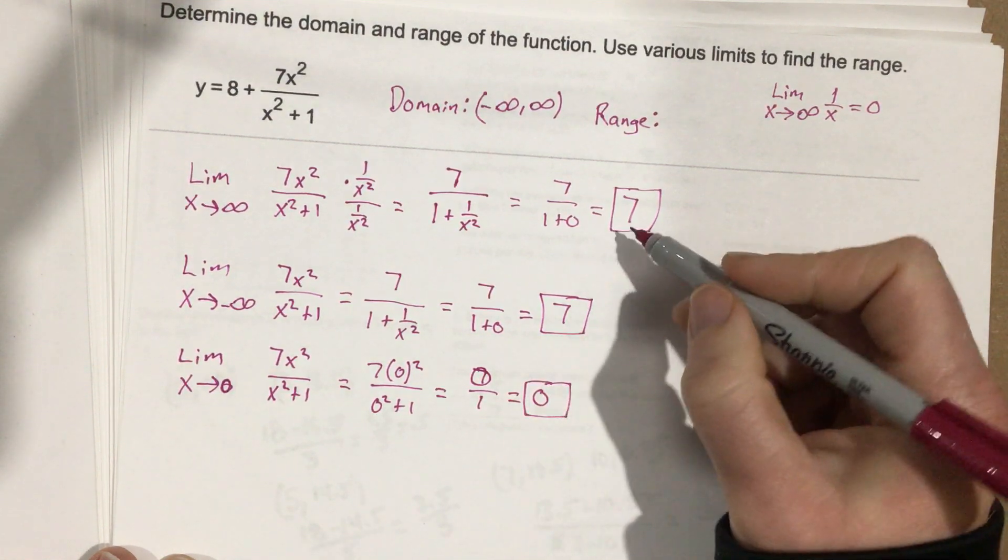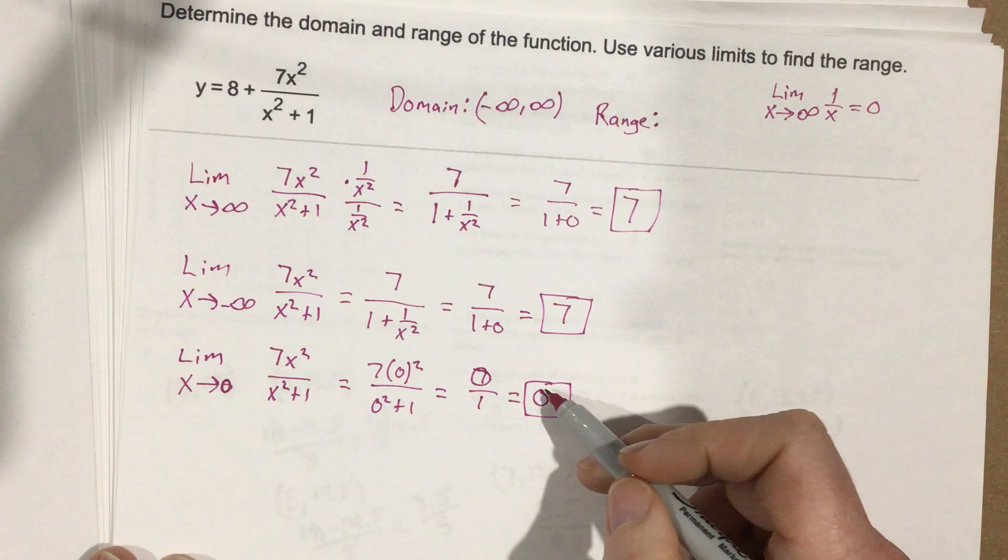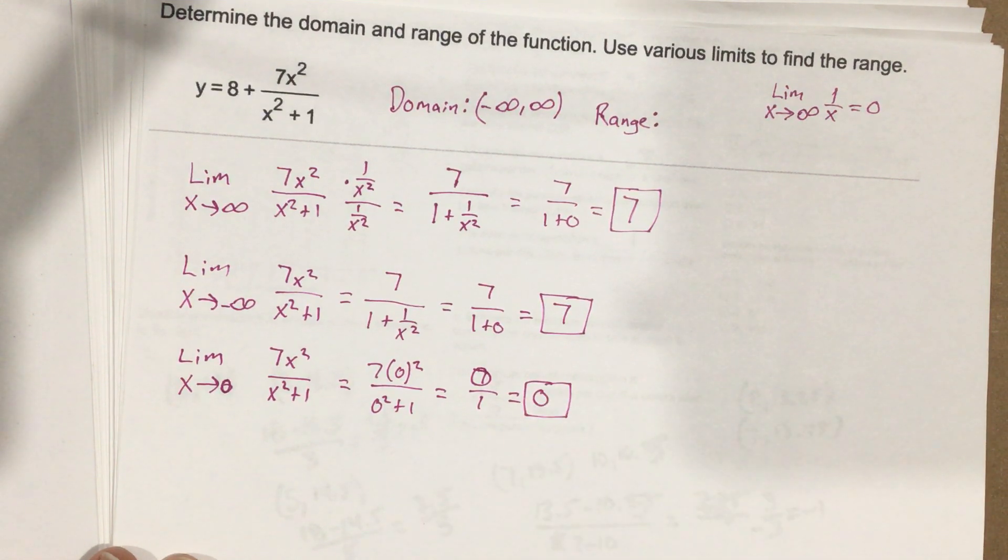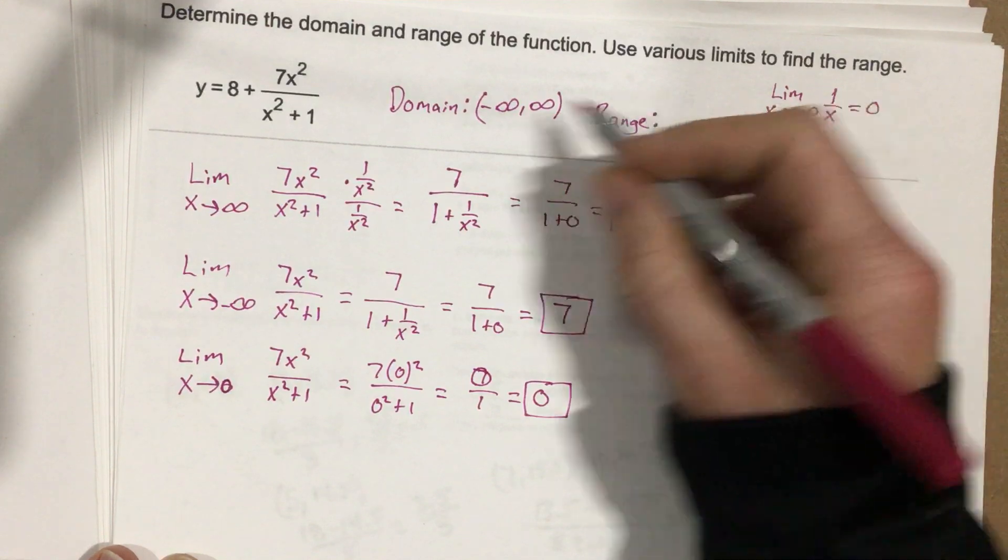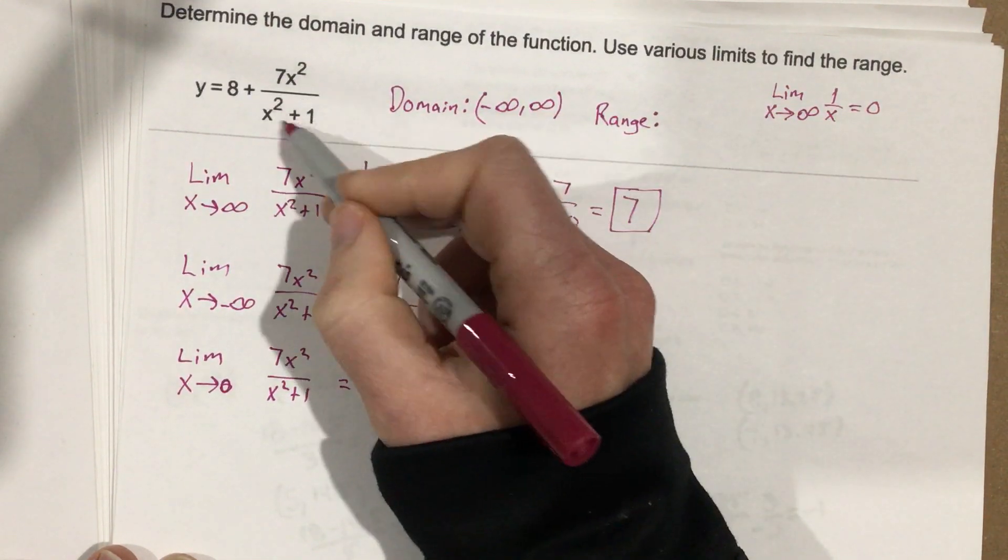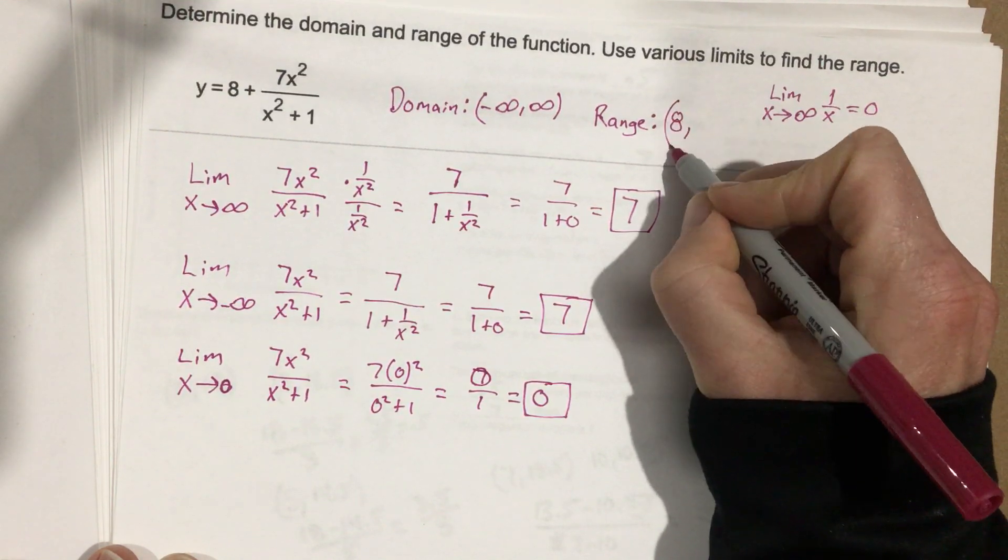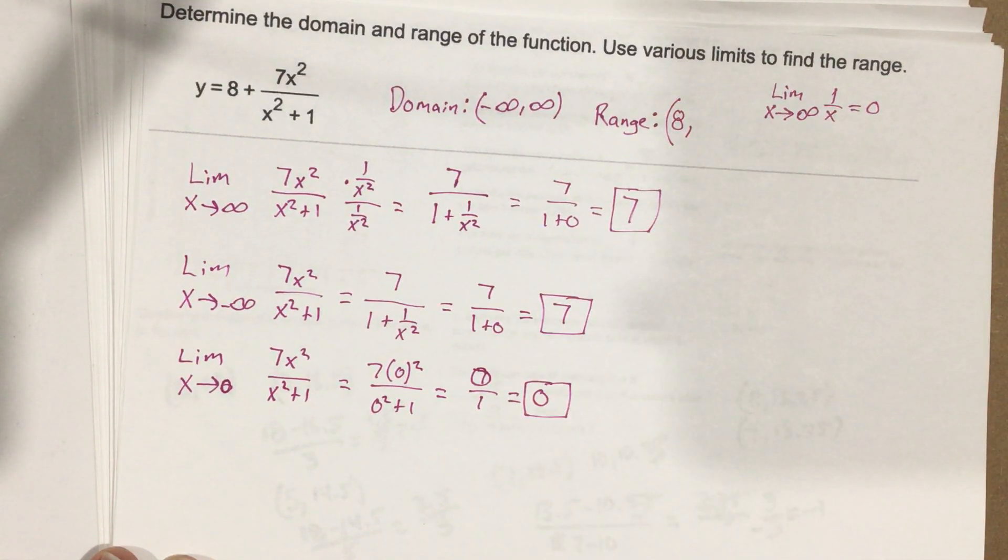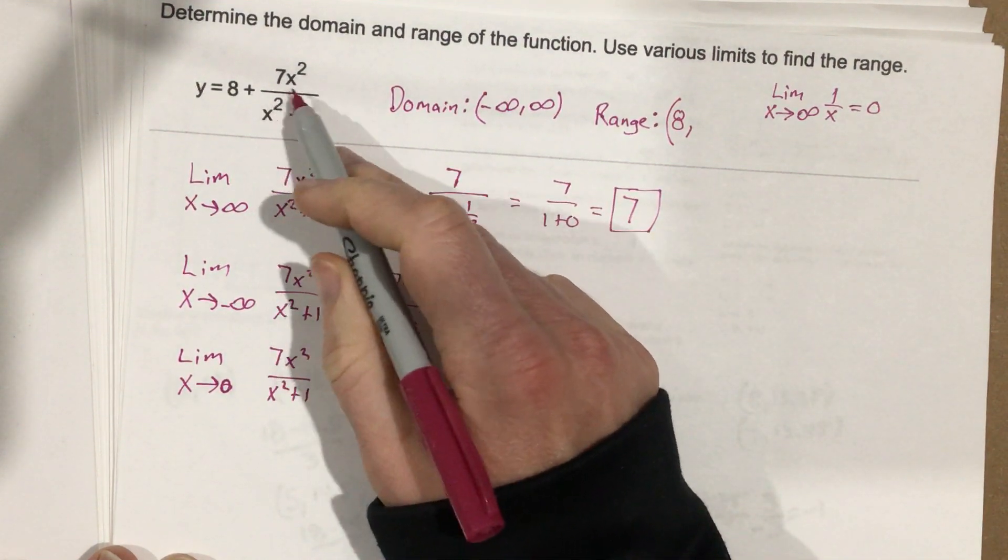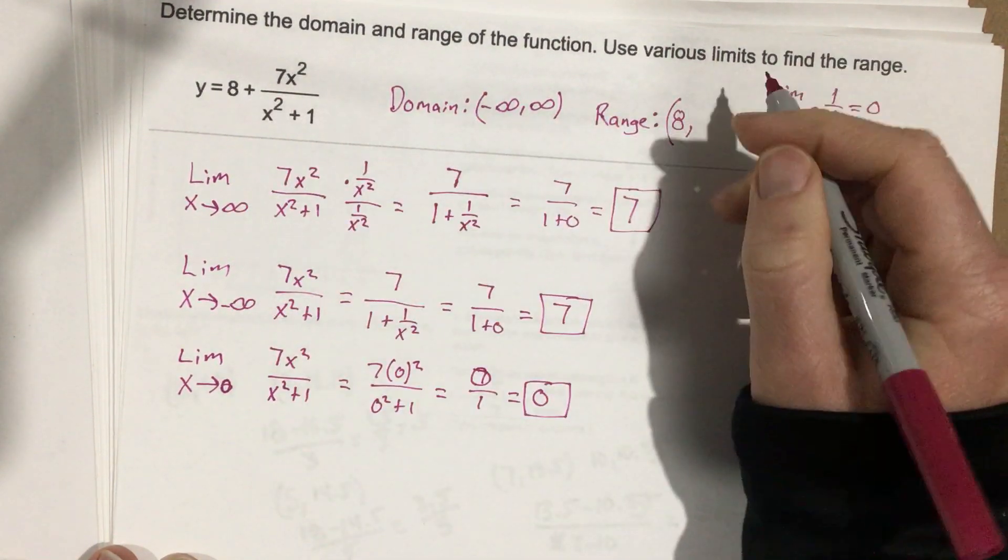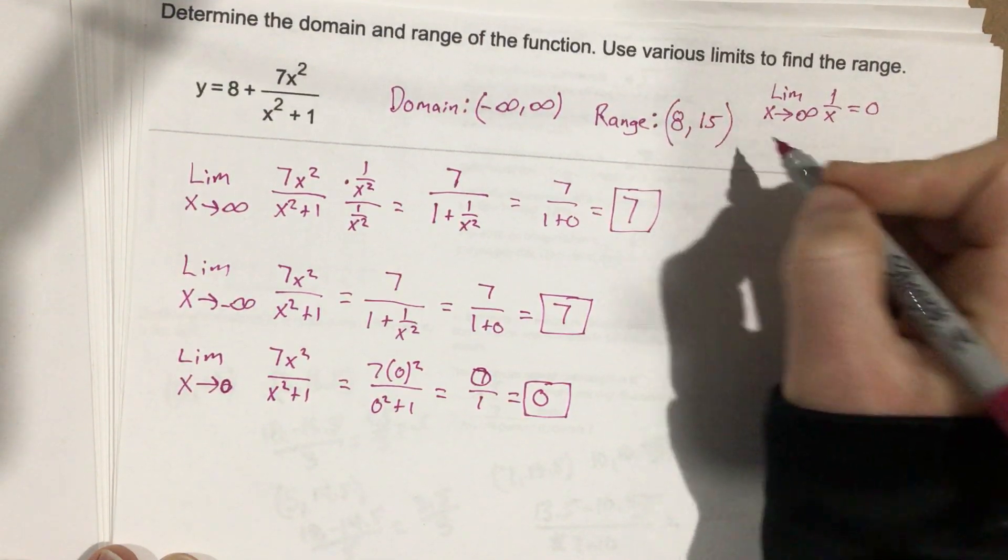Because these limits give you 7 and this limit as you approach 0 gives you 0 here, that means our range is really going from, if I use 0 for that, that means we're getting close to 8 but we're not exactly equaling it, because it never equals it, it's just getting close. And then when we plug in 7 for this limit, we've got 8 plus 7, which means 15 is the largest number, but we can't equal it.